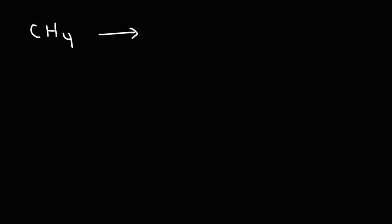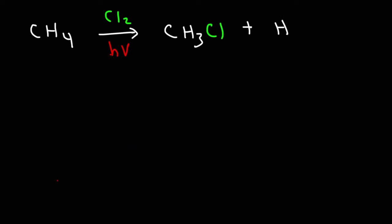Now let's talk about the chlorination of methane. Methane is an alkane and we're going to react it with chlorine gas. We can either add heat or irradiate the mixture with ultraviolet light — either will create radicals, making this a free radical reaction. A free radical reaction is a substitution reaction. We're going to substitute one of the hydrogen atoms with chlorine, giving us CH₃Cl (methyl chloride) as one product and hydrochloric acid as the other. That's a free radical substitution reaction.